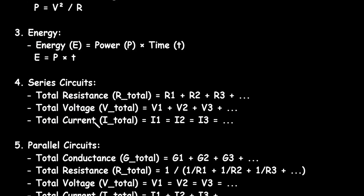Total current I total: when the circuit is a series circuit, the current is equal throughout. That is, I1 is equal to I2, and so on. The current in a series circuit is the same.